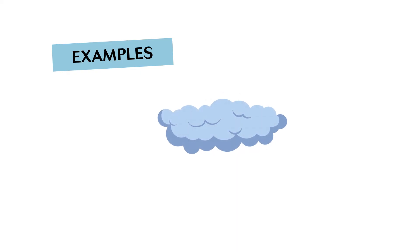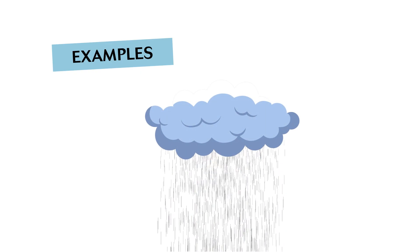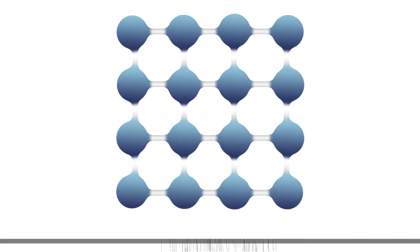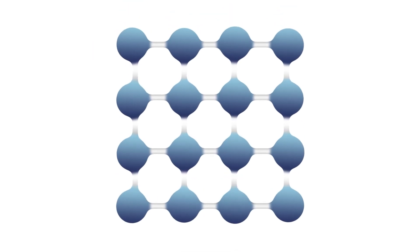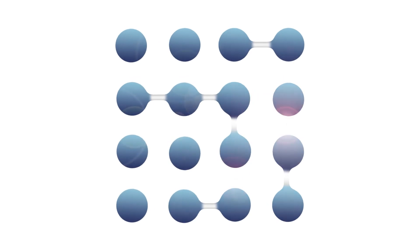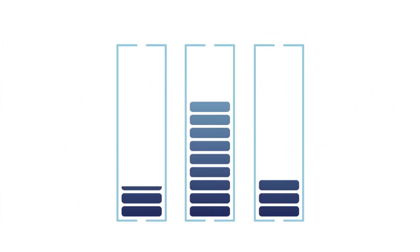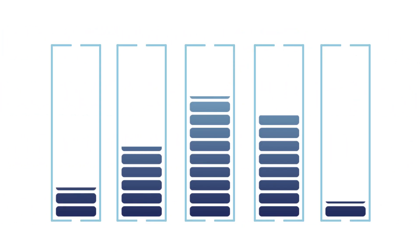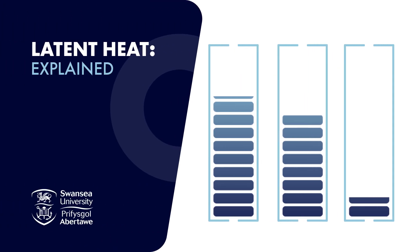Condensation of water vapor: when water vapor condenses, it releases latent heat to its surroundings. This is why clouds can produce rain. In summary, breaking or making bonds is why temperature does not rise or fall when a substance undergoes a state change. And this energy required to break or make bonds that allow a certain physical state of matter is called latent heat.